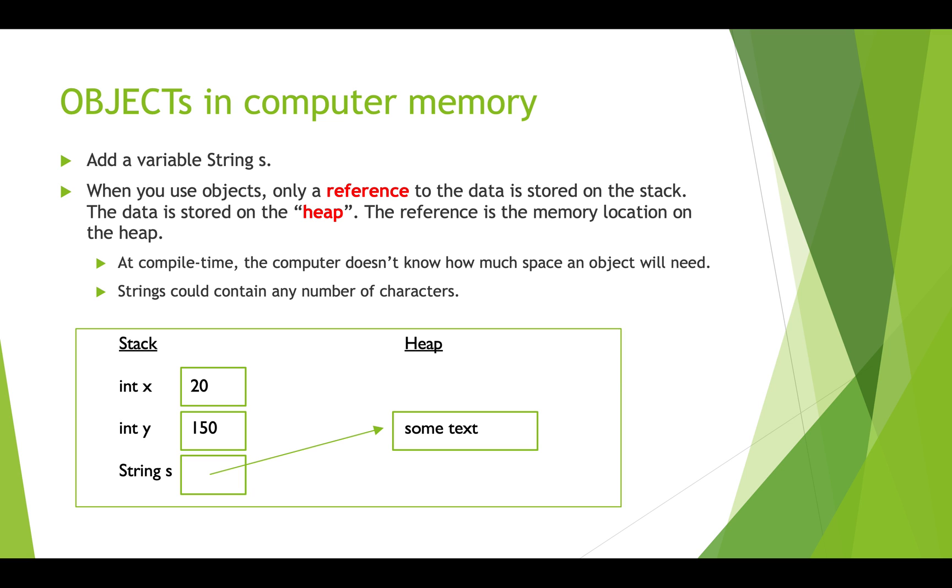So at compile time, the computer doesn't know how much space an object is going to need. A string could contain just a few characters or many, many characters. So this is what it looks like. We put the variable for the string on the stack, but that variable doesn't actually contain the text of the string. It contains a reference, which is a memory address to somewhere on the heap where we're actually going to have all of it, all of the text that is in that string.